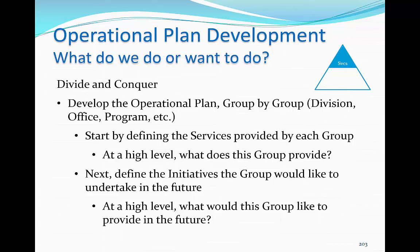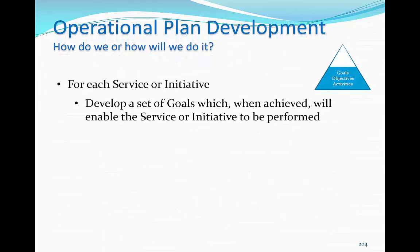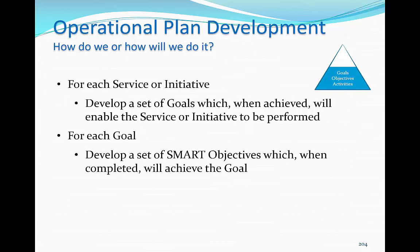Depending on your preference, you may develop the complete operational plans for a single group and then go to the next group. Alternatively, you may develop all of the services and initiatives for each group, then move down the pyramid to goals, then objectives, and finally activities. For each service or initiative, develop a set of goals which, when achieved, will enable the service or initiative to be performed. For each goal, develop a set of SMART objectives which, when completed, will achieve the goal.